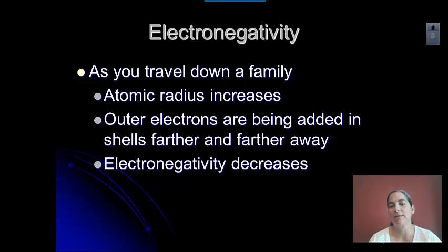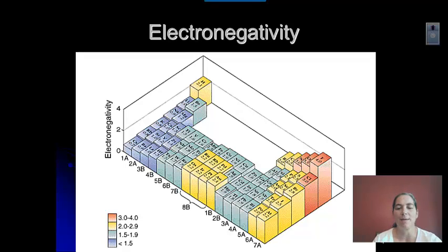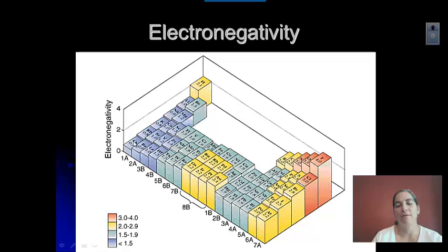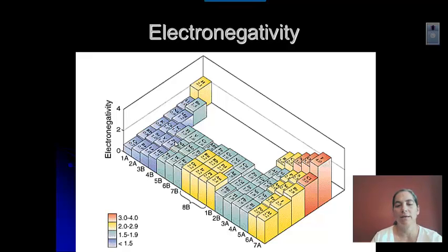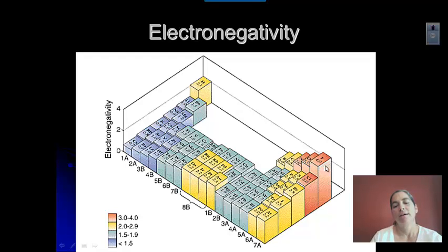Ionization energy follows the same trend as electronegativity. In the upper right-hand corner, fluorine has a really high electronegativity — it's a very small atom, and it easily attracts electrons to itself. Down in the lower left, large atoms like cesium and rubidium have a much harder time attracting electrons when in a compound. You'll notice one family is missing — those are the noble gases. They don't make compounds with other elements, so they do not have an electronegativity. The key part of that definition is that atoms attract electrons from other atoms in compounds.